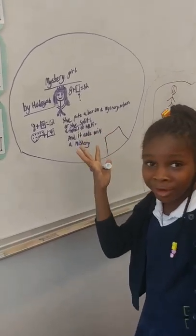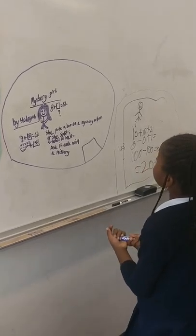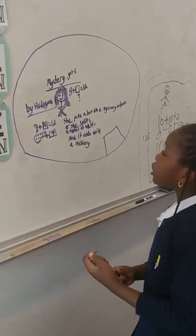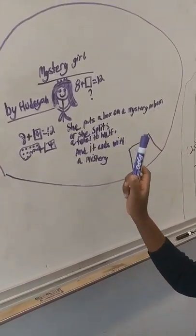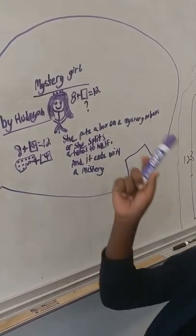Her name is Mystery Girl. She puts a box in a mystery number, or she splits a total in half, and it ends with a mystery!